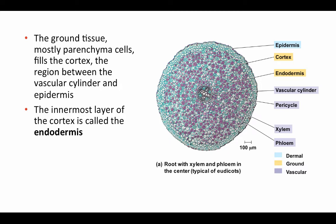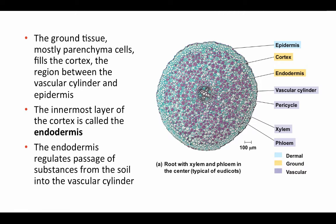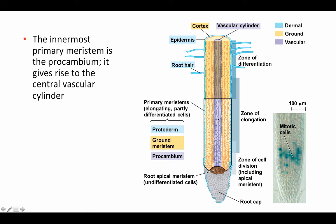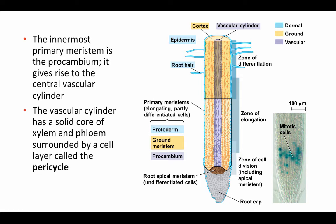The innermost layer of the cortex is called the endodermis — just outside the vascular bundle, it forms a cylinder of cells called the endodermis around the vascular cylinder. The endodermis regulates the passage of substances from the soil into the vascular cylinder. The innermost tissue in the growing root is the procambium, giving rise to the central vascular cylinder. The vascular cylinder has a solid core of xylem and phloem surrounded by a cell layer called the pericycle — the very outermost layer of that inner vascular cylinder. The pericycle is interior to the endodermis, while the endodermis is part of the cortex.